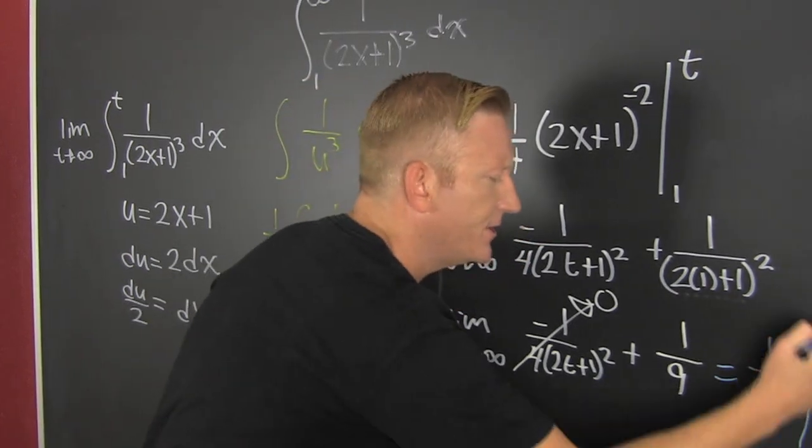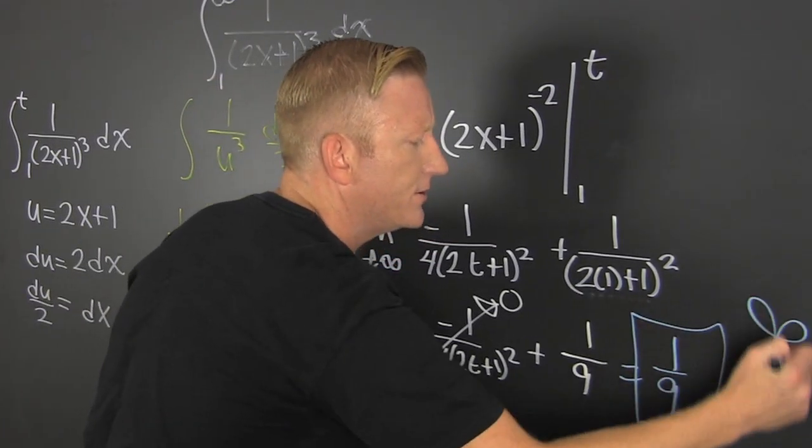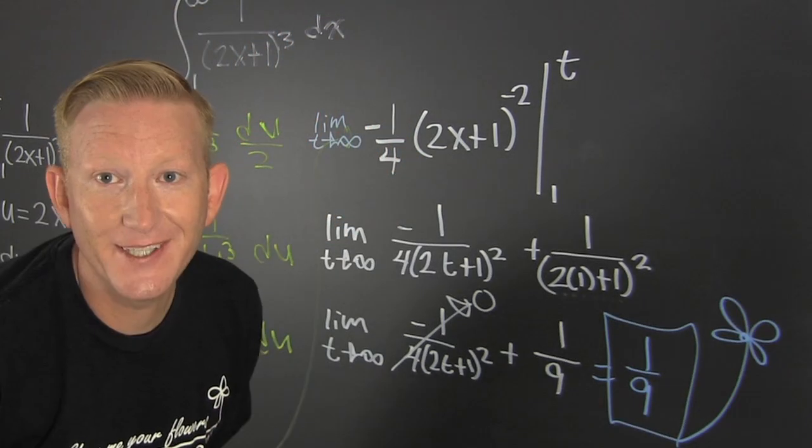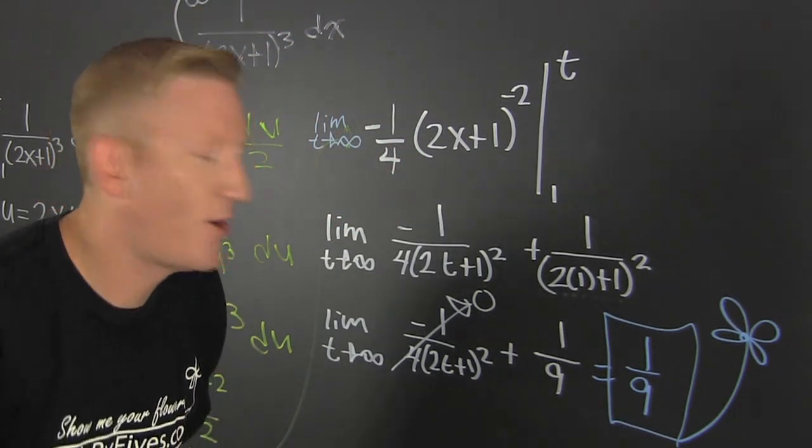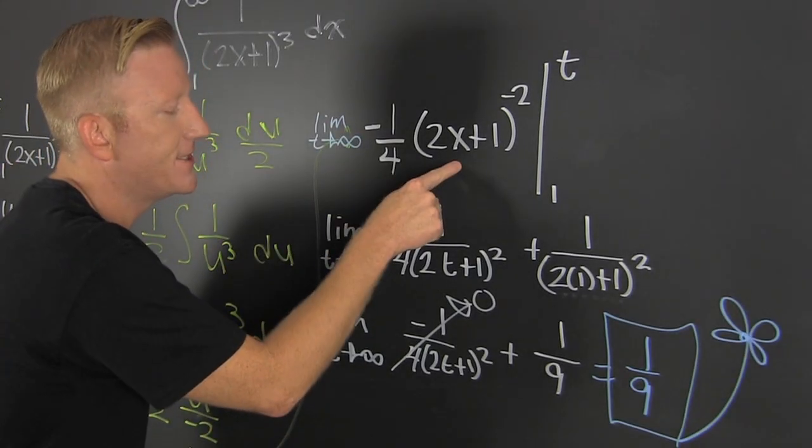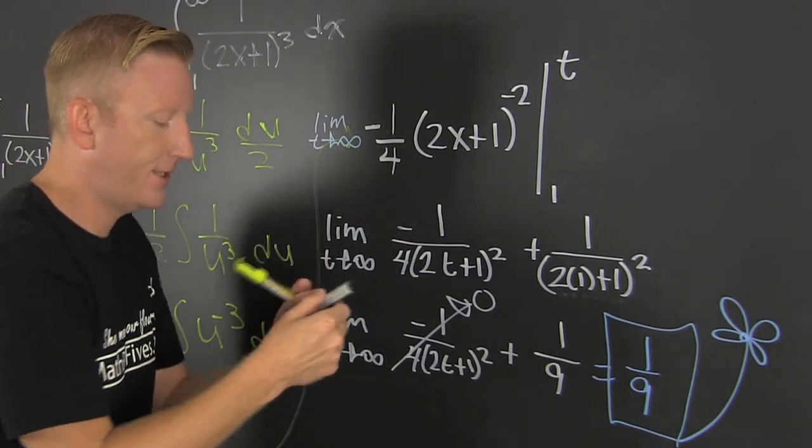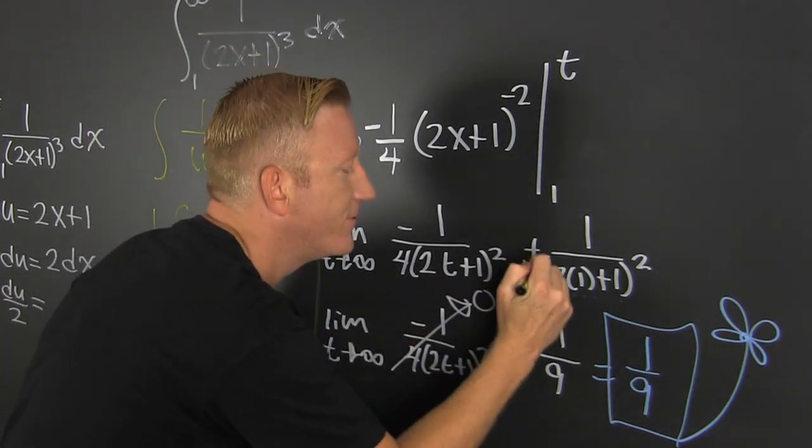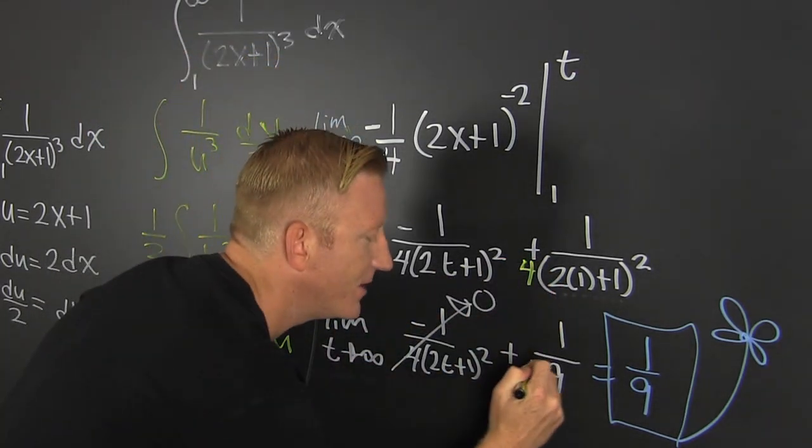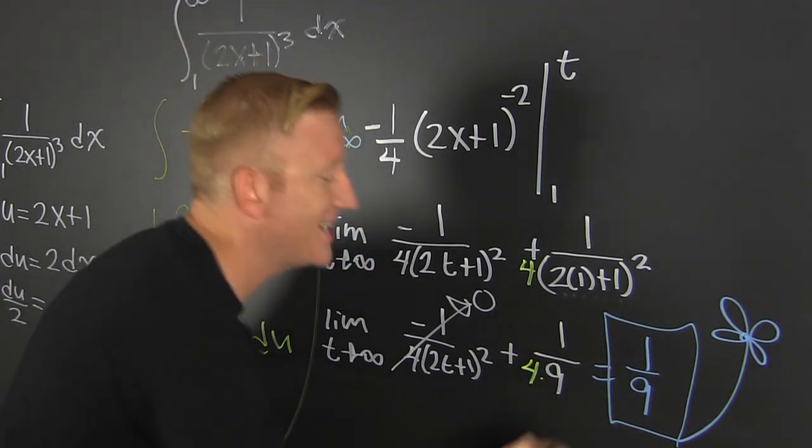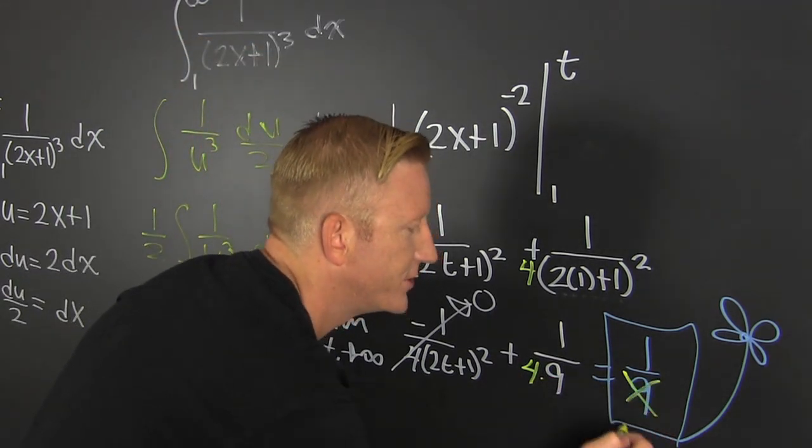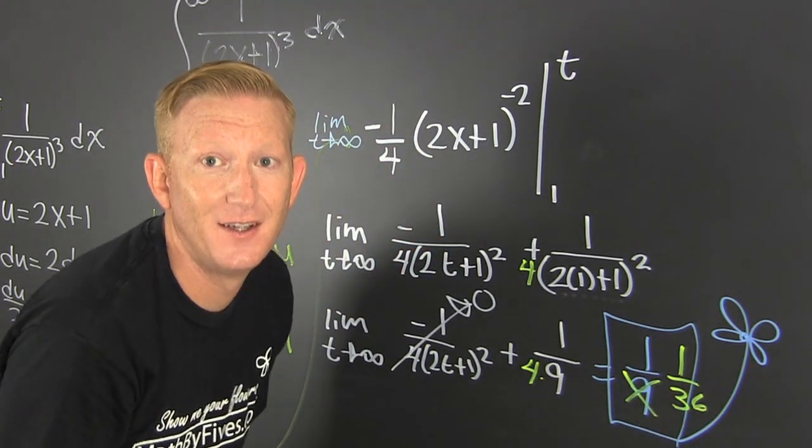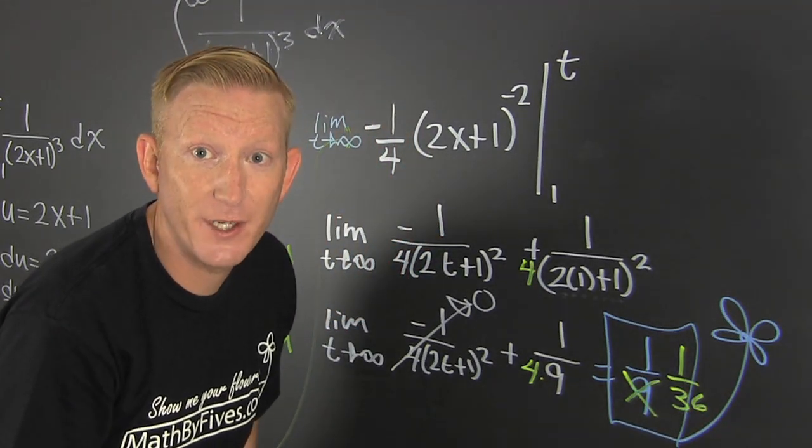Before you get too happy on your keyboards, what did I forget? That 1 fourth is on this entire thing, meaning that this one should have had a 1 fourth on it also. So then there should have been a 4 there, and then there should have been a 4 there. And then that's not a 9, that's a 1 over 36. Oops, I did it again. I feel like Brittany.